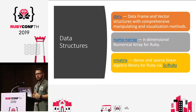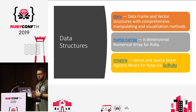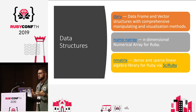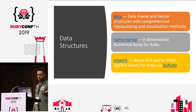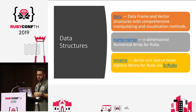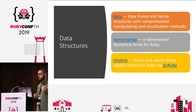We have libraries for many different data structures. For example, Daru is the implementation of data frames in Ruby. Data frames are the most important data format for data science — they allow you to clean and manipulate data very easily. We have Numo NRA and Matrix, which are similar libraries, but NRA is really fast and doesn't work well with Daru. Matrix has performance issues with an open bug for two years, but works well with Daru.